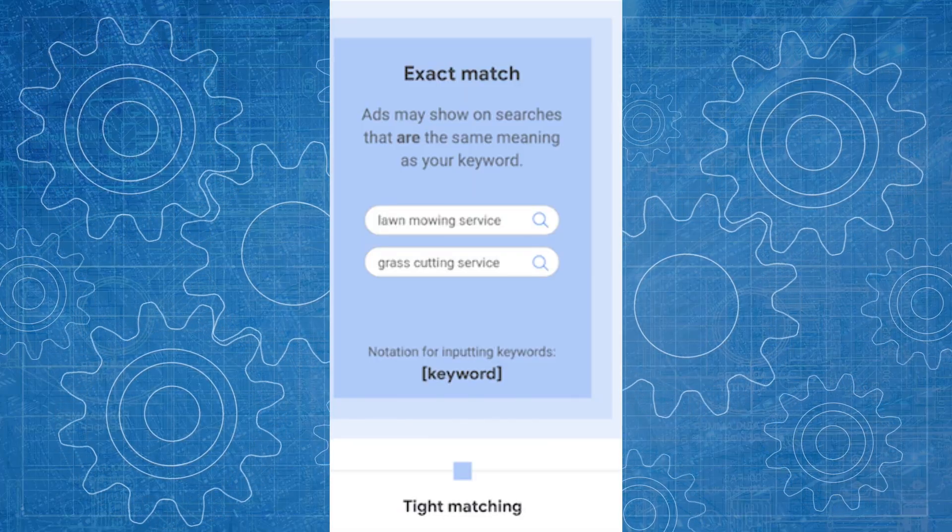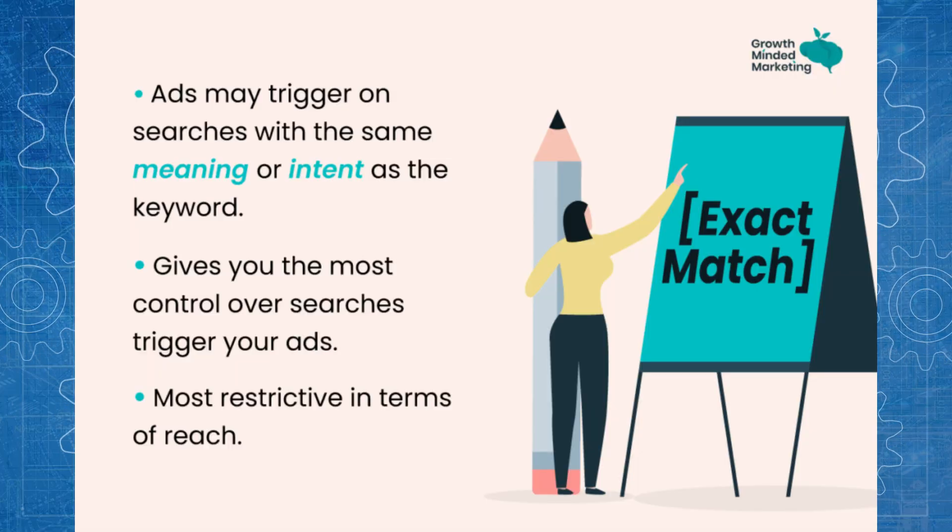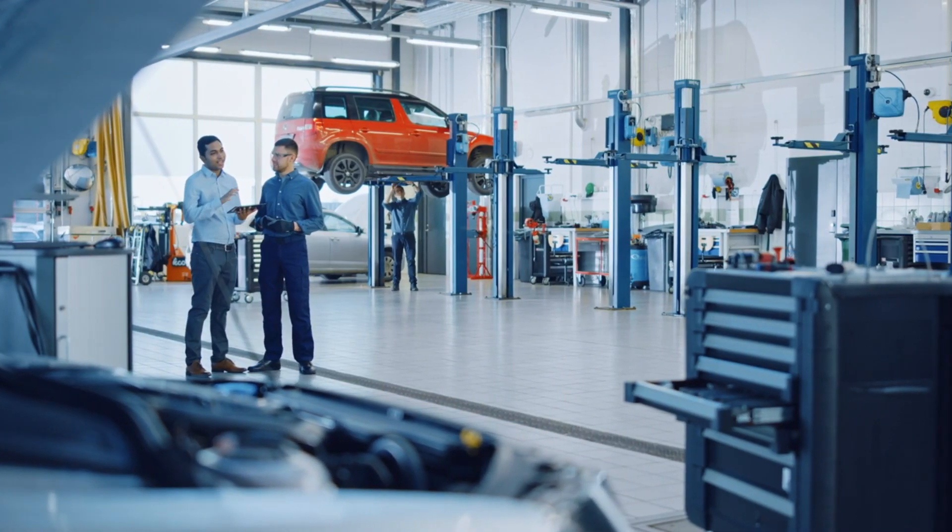Finally, we have exact match. This match type is where you put square brackets around your keyword, and it means the person's search term matches your keyword as long as the meaning is exactly the same. It doesn't mean word for word — someone typing 'car service garage' and someone typing 'car servicing garage' would both match an exact match term because that is the exact sentiment. It will give you very accurate quality of traffic, but those close variants allow your ads to show for searches that exactly match the sentiment, without giving you traffic outside of that. It is still the tightest match type available.